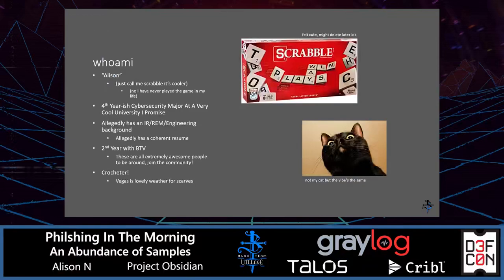A little bit about myself. My name is Allison. You can just call me Scrabble, that's what I go by here. I'm a fourth-year cybersecurity major at a university up in the Northeast. My background is mainly in incident response, reverse engineering malware, and cybersecurity engineering, which is a little bit all over the place. But generally speaking, I stay in the Blue Team side of things. This is my second year with Blue Team Village.